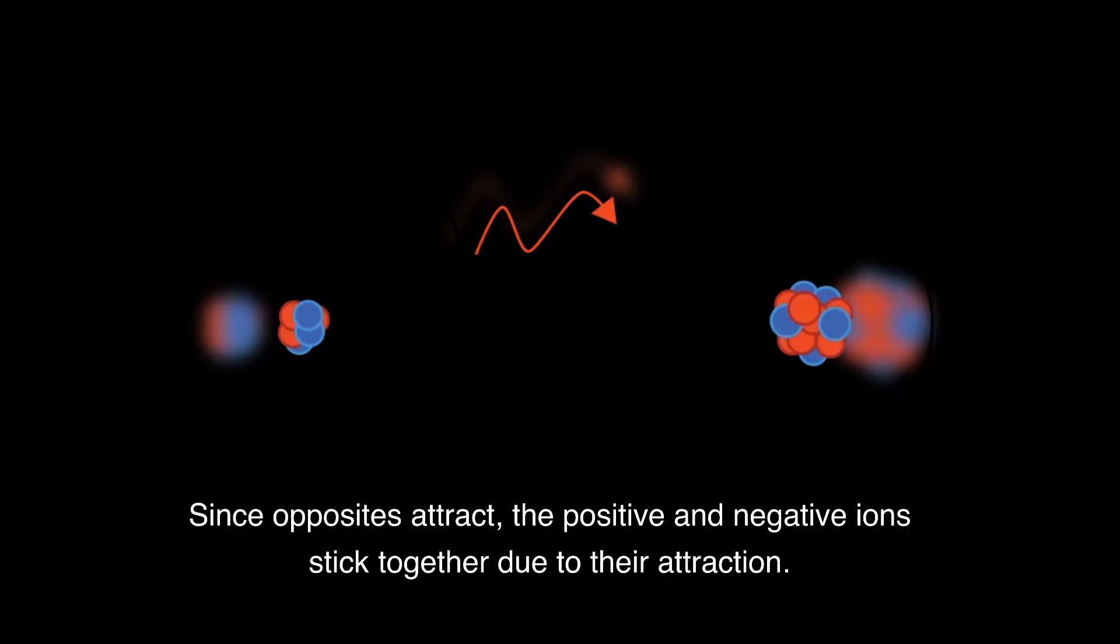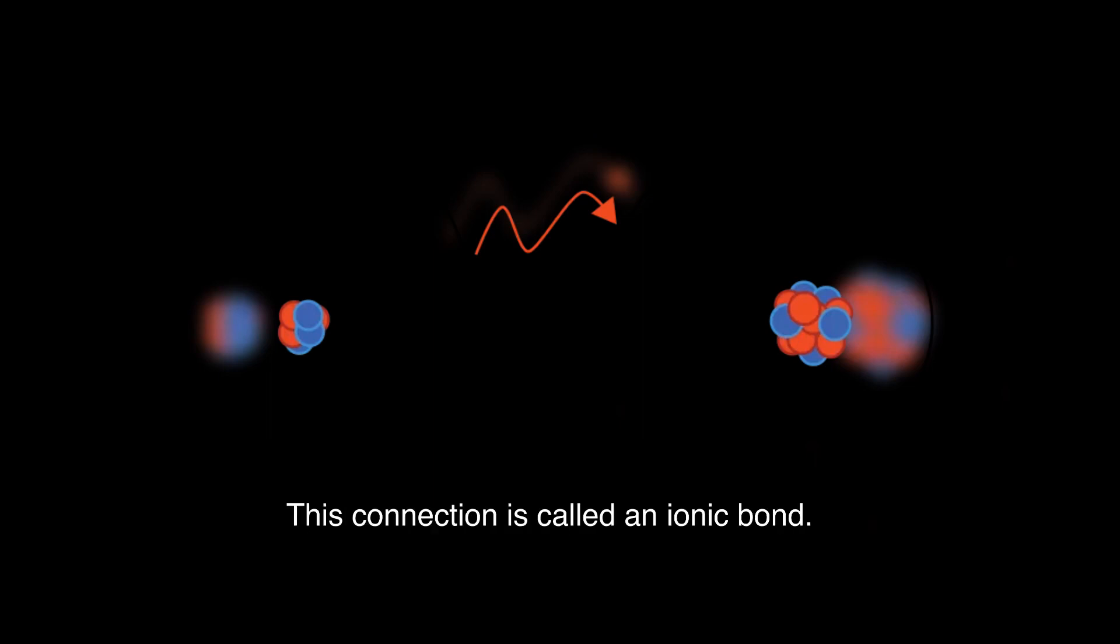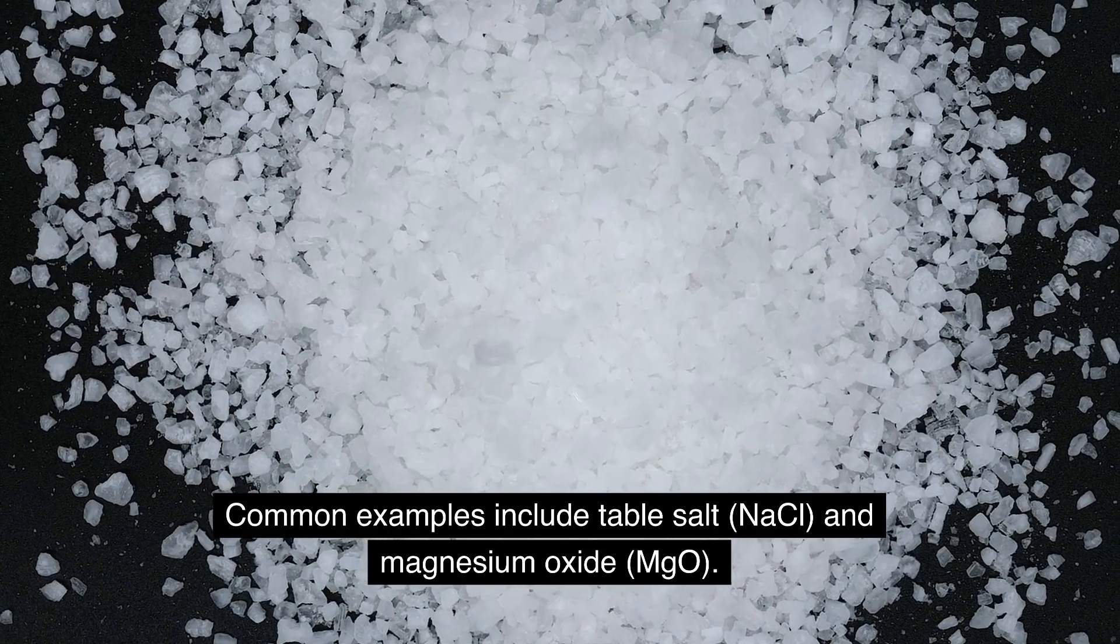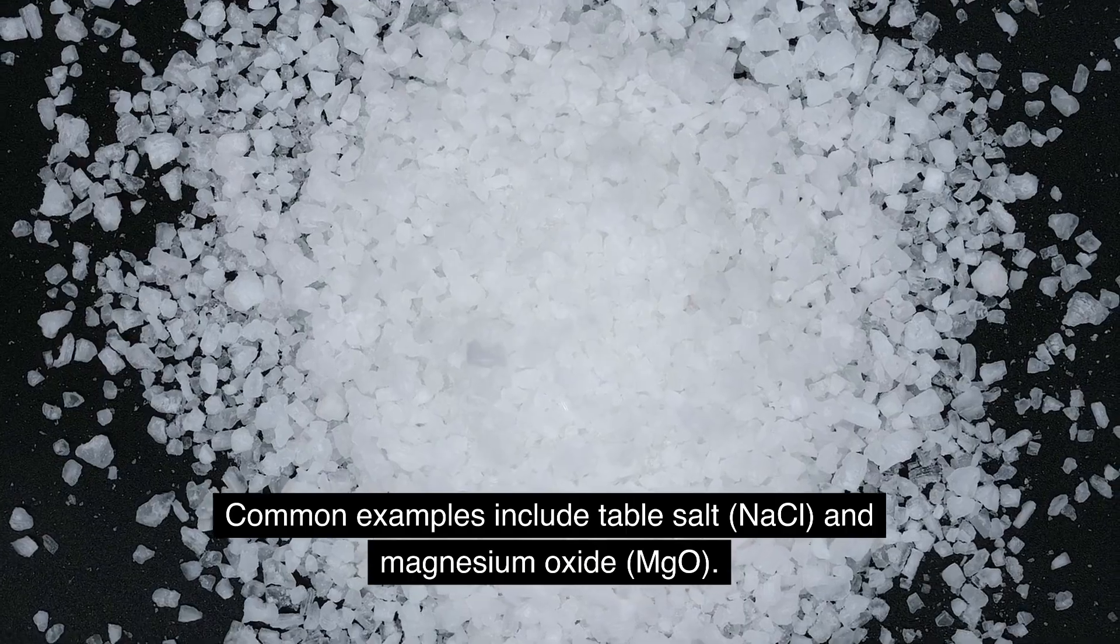Since opposites attract, the positive and negative ions stick together due to their attraction. This connection is called an ionic bond. Common examples include table salt (sodium chloride) and magnesium oxide (MgO).